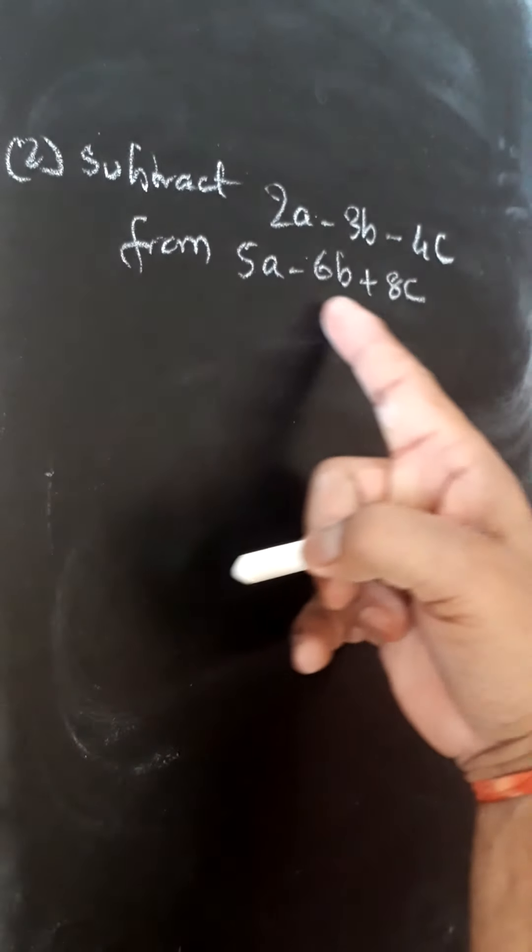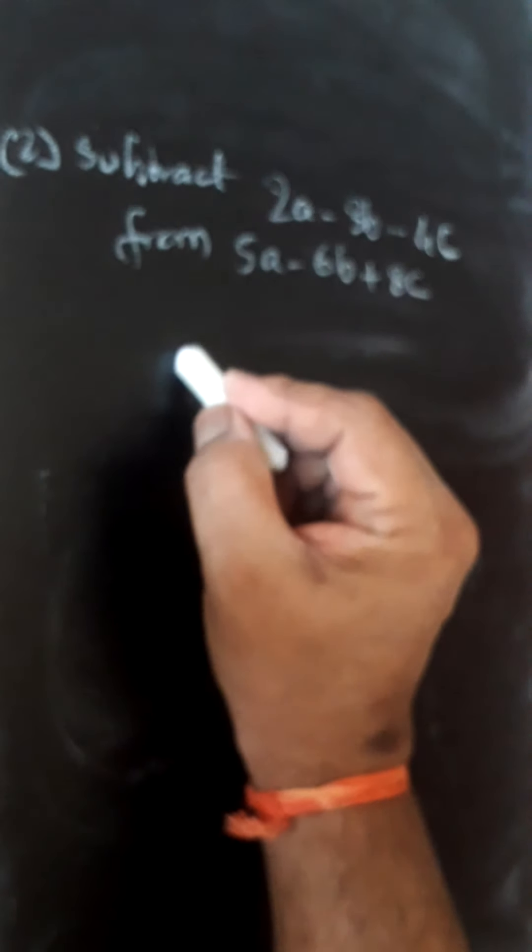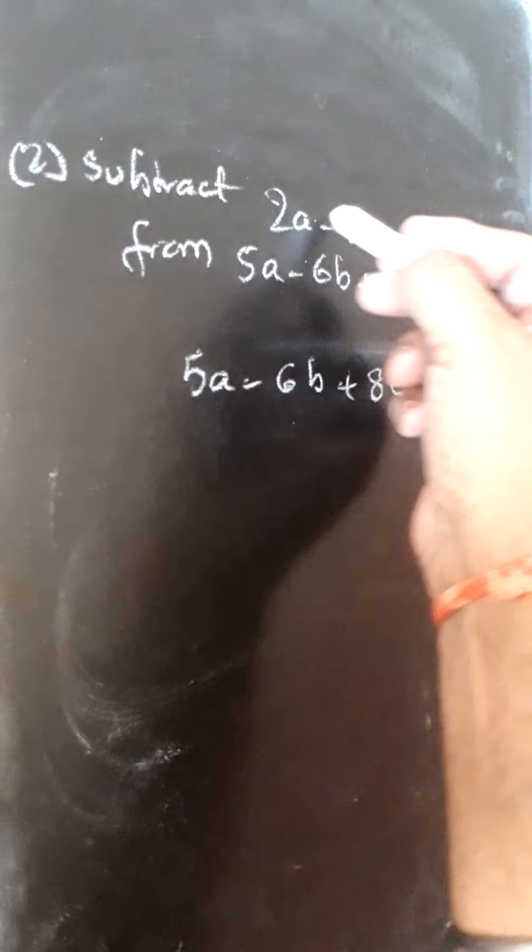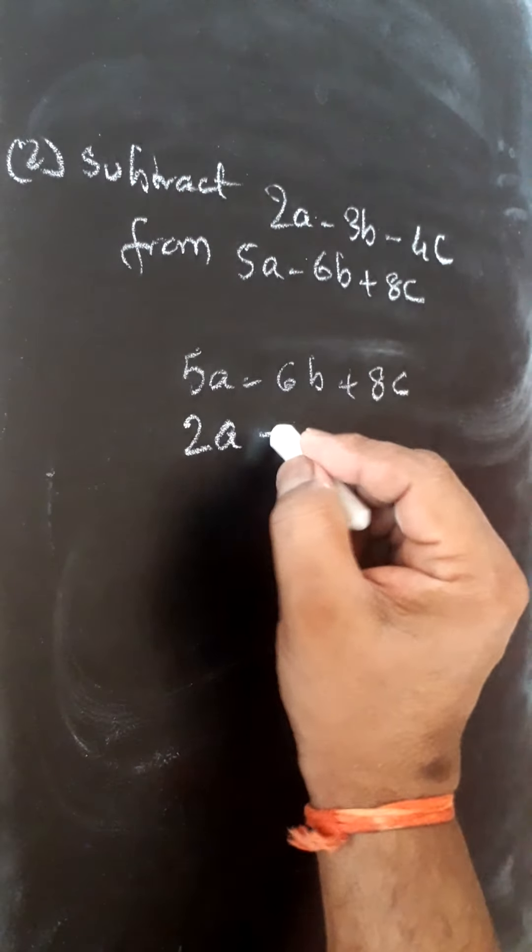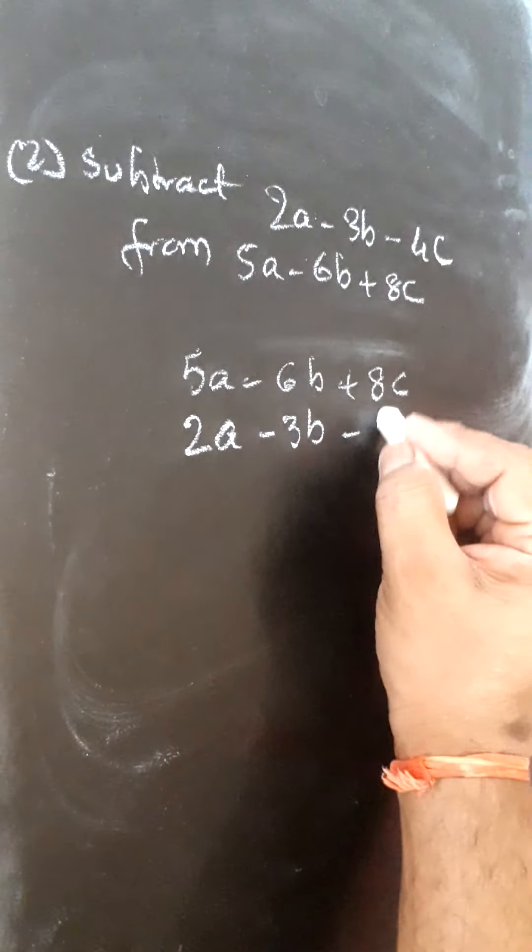We will write again this first: 5a - 6b + 8c. This will be written below: 2a - 3b - 4c.